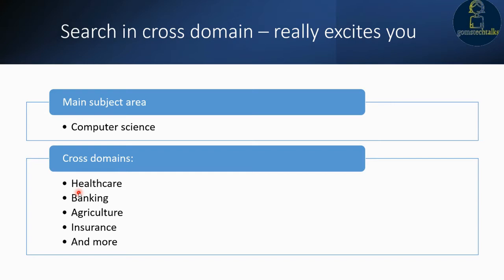You can decide based on your interest. For example, if you are doing research in IoT and interested in agriculture, you can combine IoT with agriculture — finding a problem there and implementing your IoT device or concept to solve issues. This is what searching in a cross domain means.